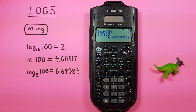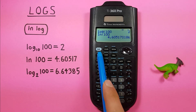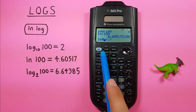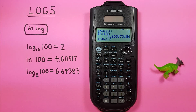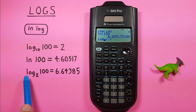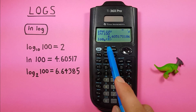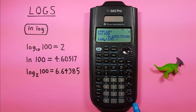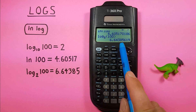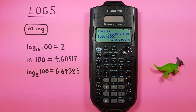But what if we want to do logs for different bases? This is why this calculator is so great. We press the ln log key once, twice, and three times, and we get this log with two blanks — so we can enter whichever base and number we want. If we want to find log base 2 of 100, all we have to do is press the 2 for the base, move the arrow key to the right once, enter the 100, and press enter. We get the result for log base 2 of 100, which is 6.64385.